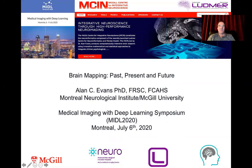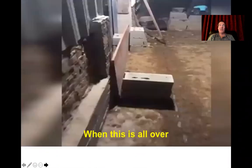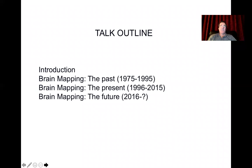Hi, my name is Alam Evans. It's a pleasure to be here in these very strange times. I'm going to be talking about brain mapping, past, present, and future. I've divided the evolution of the field into roughly three epochs: the past from 1975 to 1995, then the present up until about 2015, and what's going on right now for the last five years is both somewhat of the present, but also the future.